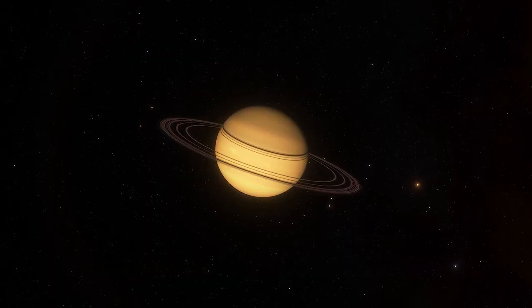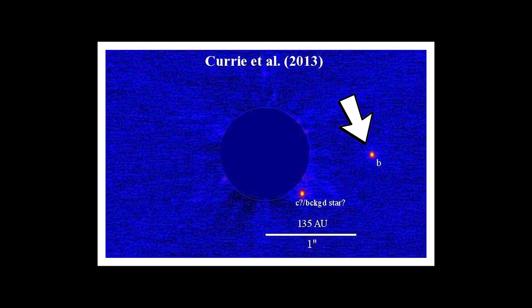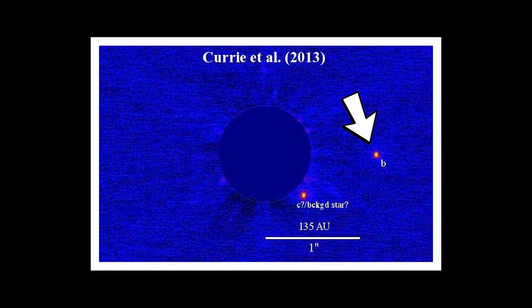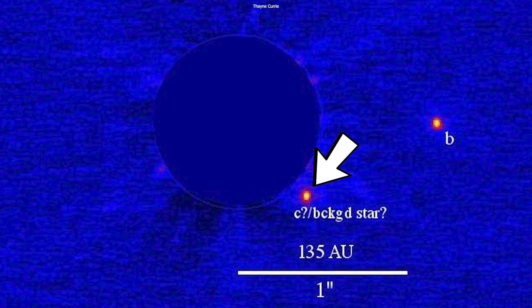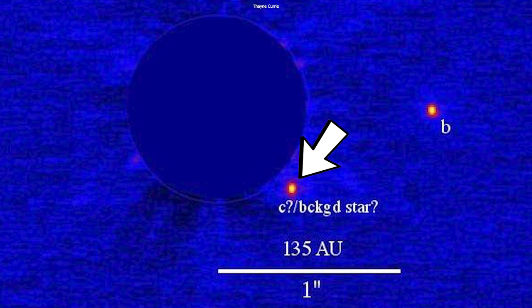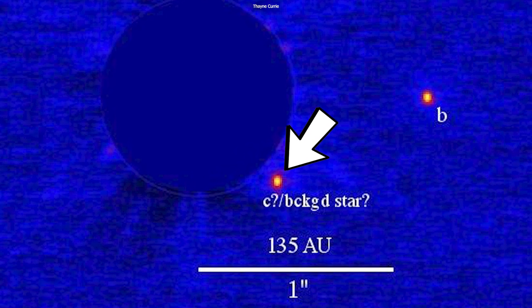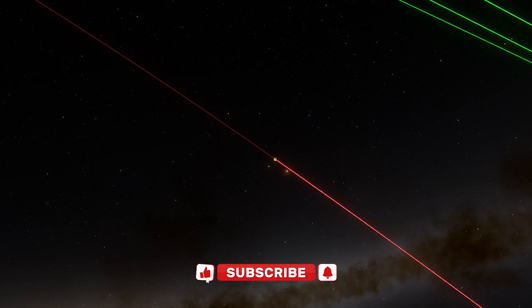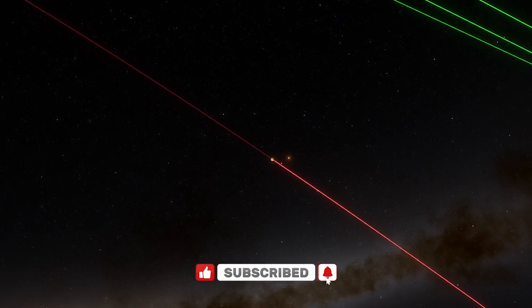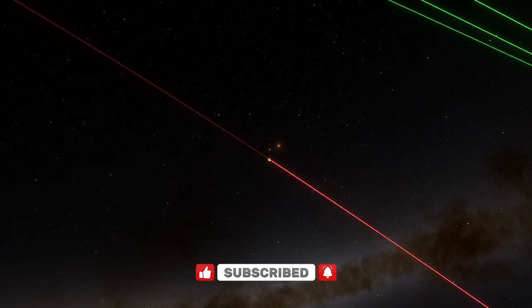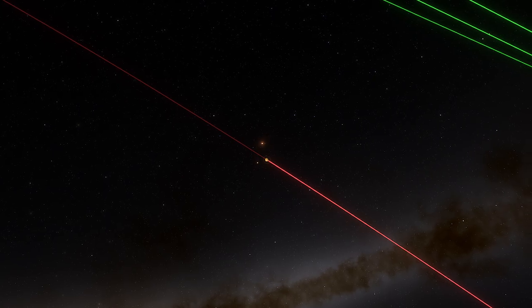What's interesting is that this planet was directly imaged in 2013 by University of Toronto astronomer Thane Curie, and this object here is either a second planet or a background star. Even though this exoplanet is apparently below the mass limit of a brown dwarf, it is still undetermined whether it's a planet or a failed star.